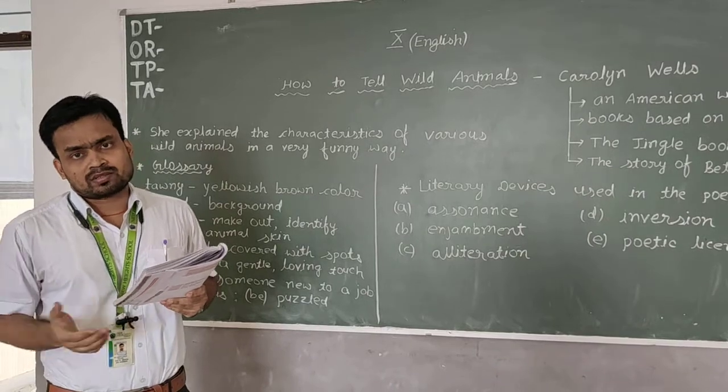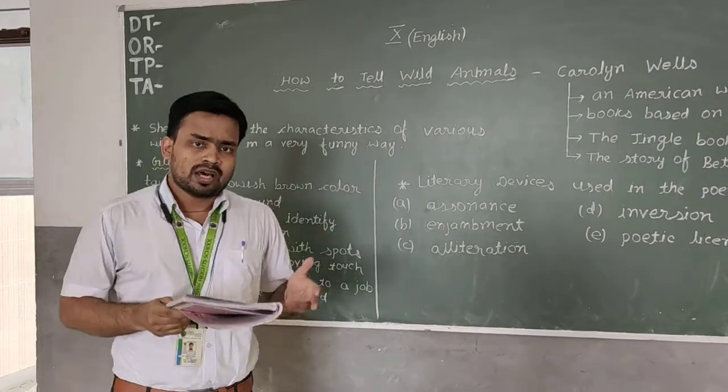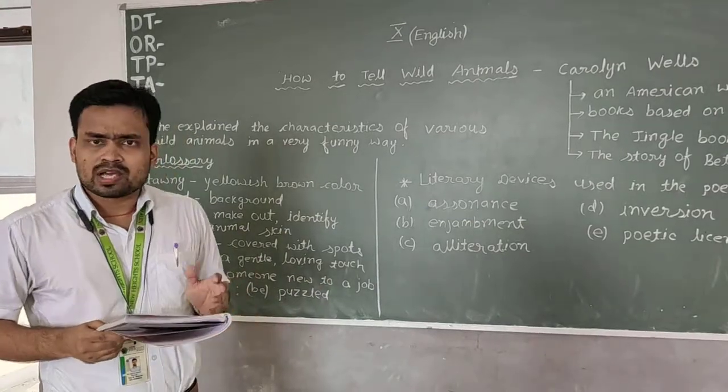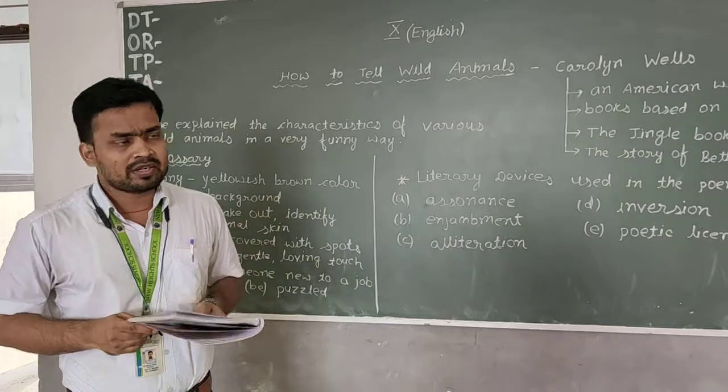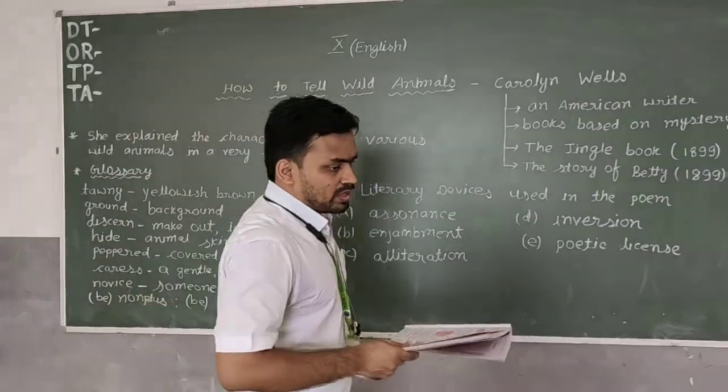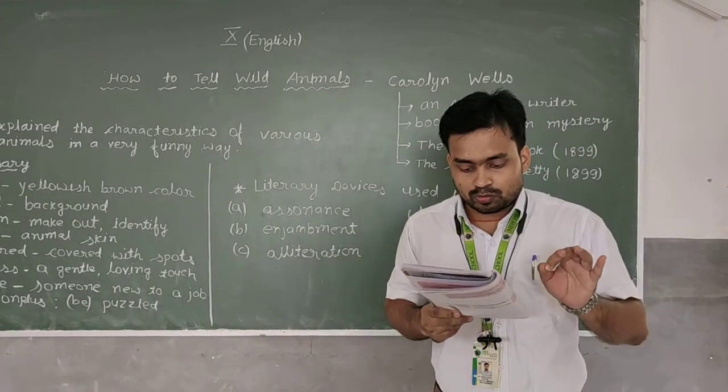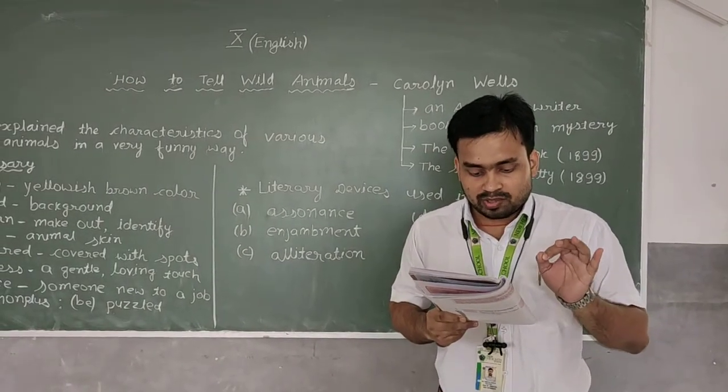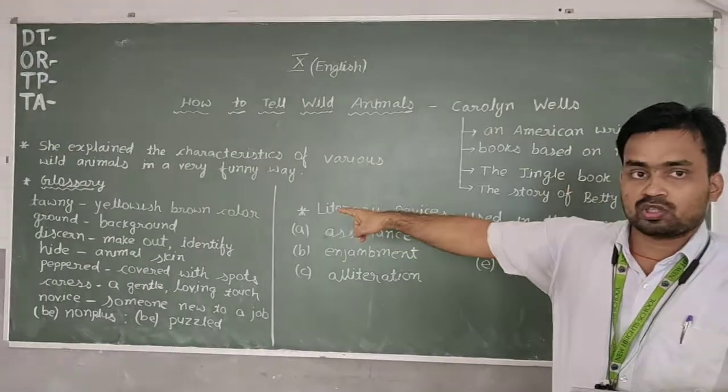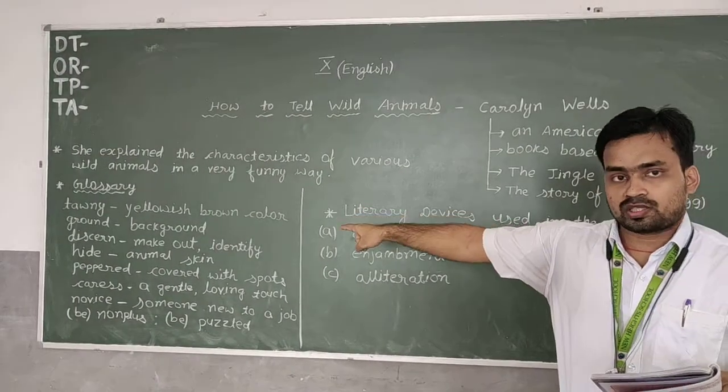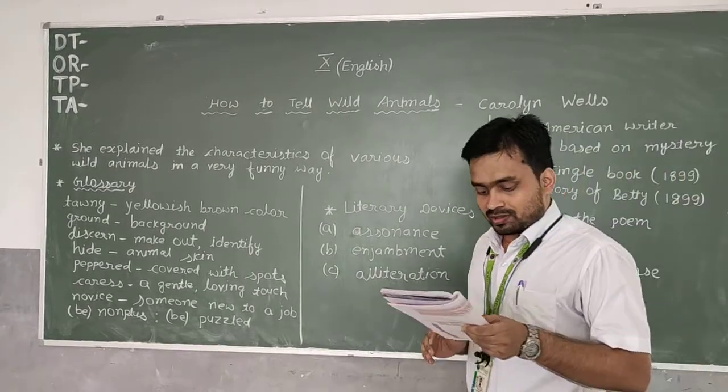I told you when you were studying in class 9th, whenever there is a repetition of vowel sound, assonance is used. And apart from assonance, in this line, enjambment is used. Enjambment is a figure of speech in which a line continues without any obstruction. As you can see, line number 3, 'and if there should to you advance a large and tawny beast.' Tawny means yellowish brown color. I have mentioned all the difficult words there. You can go through that while I am explaining. So the first stanza is over.